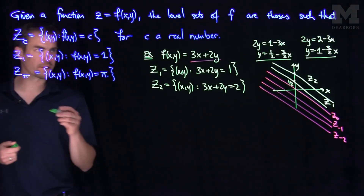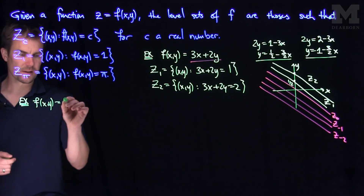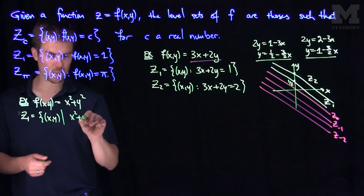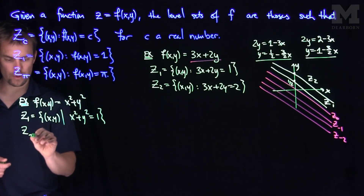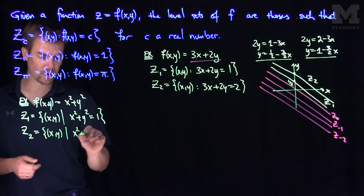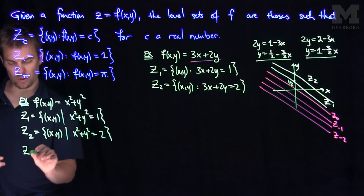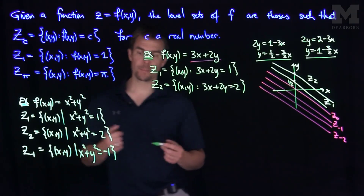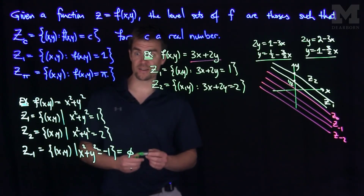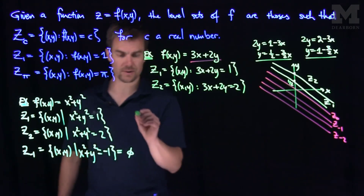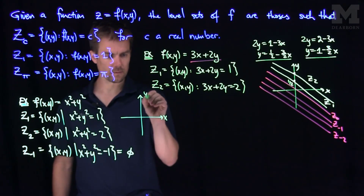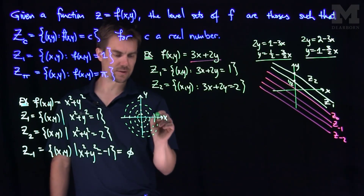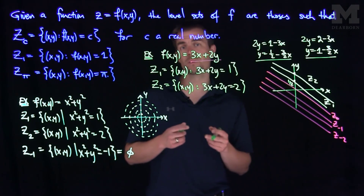Let's see another example. For f of x, y equals x squared plus y squared: z1 would be the set of all points x and y such that x squared plus y squared equals 1. z2 would be the set where x squared plus y squared equals 2. z negative 1 would be the set where x squared plus y squared equals negative 1, but since x squared plus y squared can't be negative, this set is empty — it's a null set. Every other level set is a circle centered at the origin of a different radius, so these level sets are concentric circles. From these two examples, the level sets of functions of two variables are collections of curves.